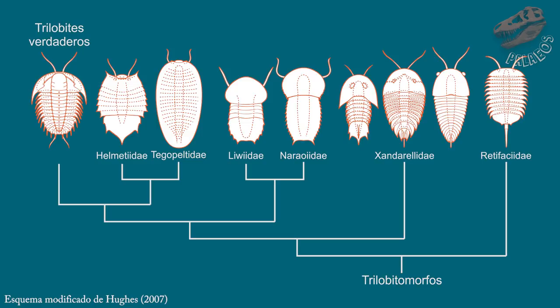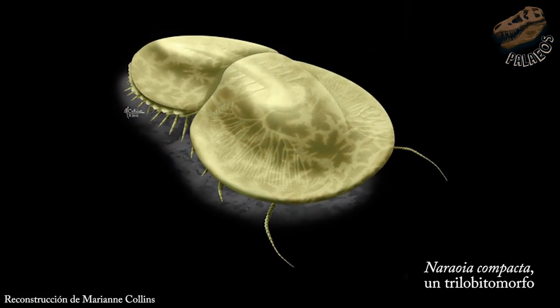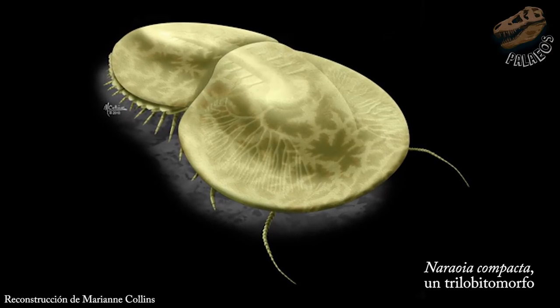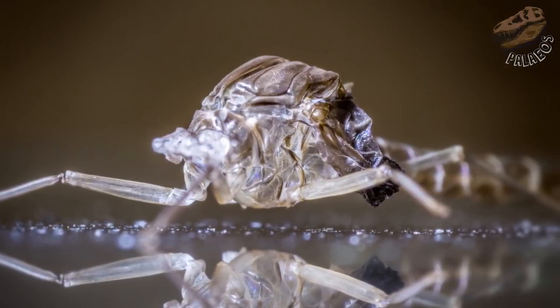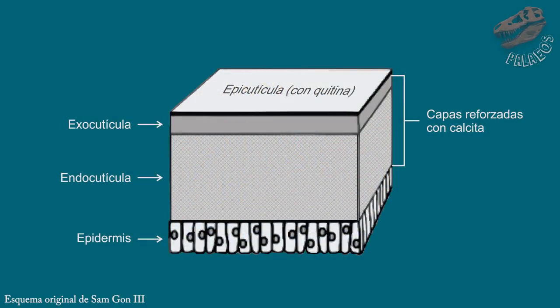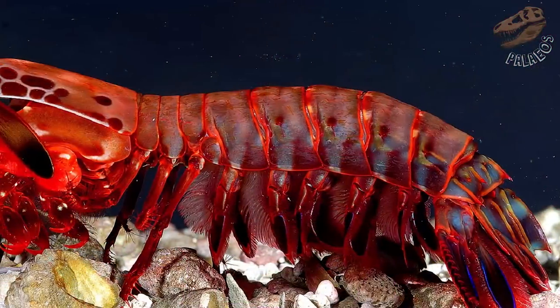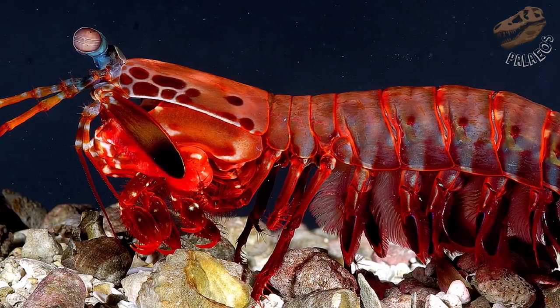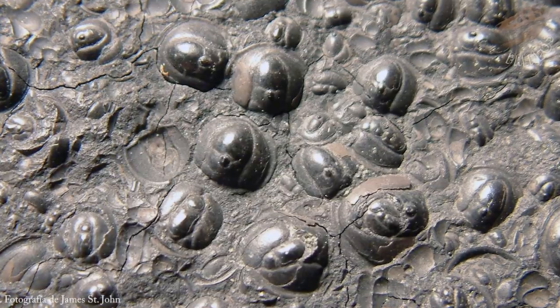Muchos trilobitomorfos son muy similares a los trilobites, pero ¿por qué no son considerados como tales? Lo más simple que distingue a los verdaderos trilobites es la naturaleza de su exoesqueleto. Mientras que la inmensa mayoría de los artrópodos poseen un exoesqueleto de quitina, una biomolécula de naturaleza proteica, los trilobites innovaron reforzando las capas exteriores con fosfato de calcio y carbonato de calcio en forma de calcita. Si bien los crustáceos también incorporan carbonato de calcio, no forman gruesas capas de calcita. Esta es la razón de que los fósiles de trilobites sean tan abundantes, pues su potencial de fosilización era muy alto.